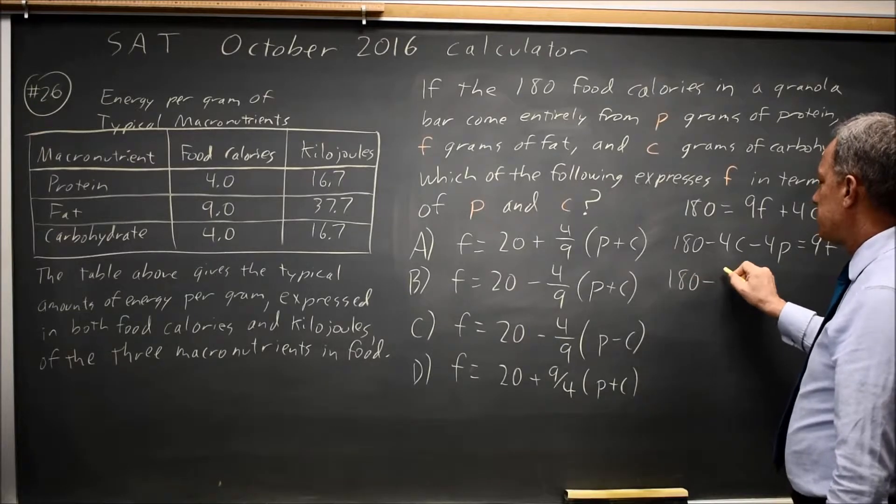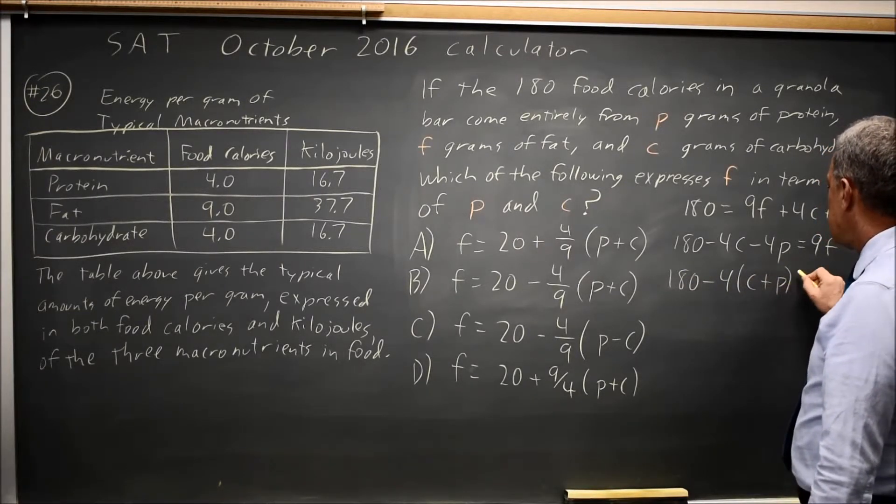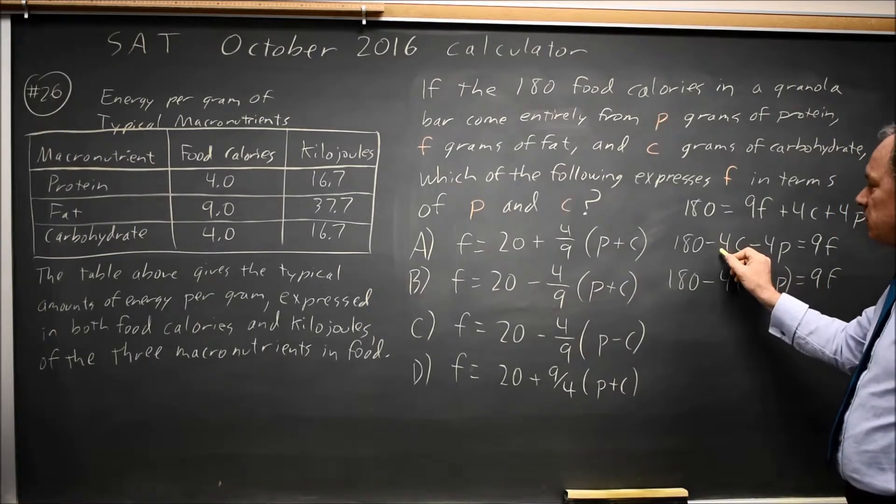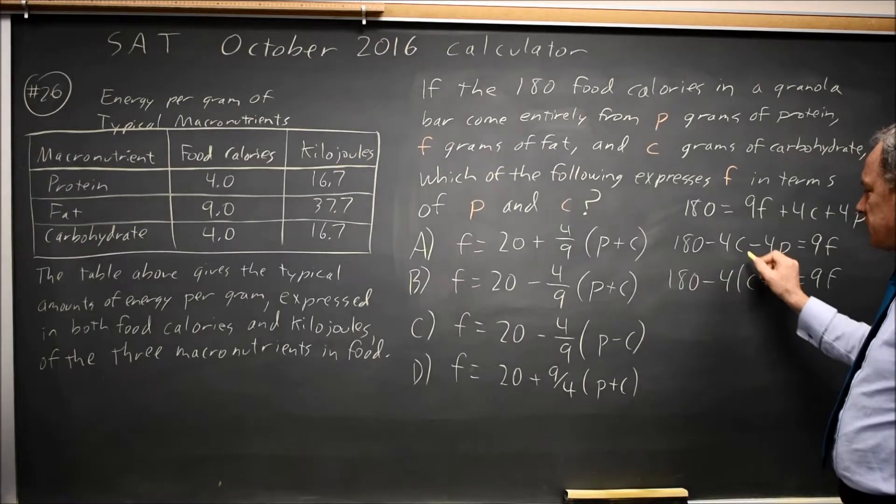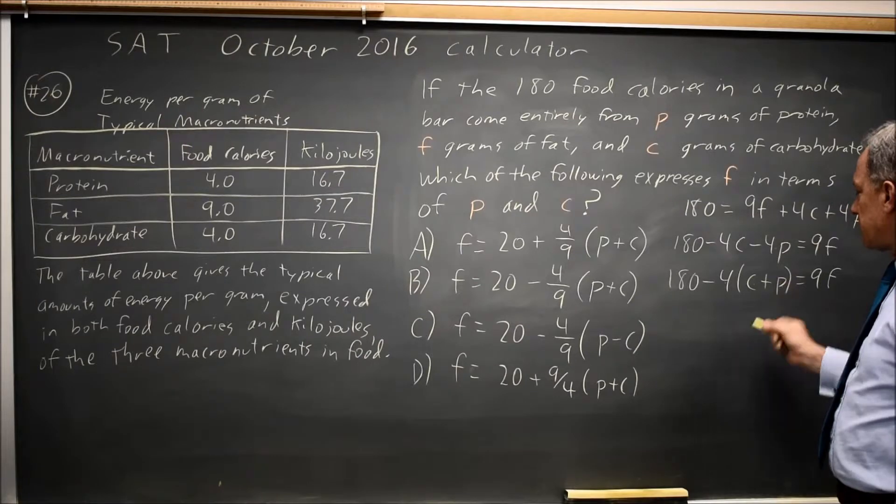So let's write that as 180 minus 4 times the quantity C plus P equals 9F, and this is a plus because when I distribute negative 4 times C, that's negative 4C, negative 4 times P is negative 4P, so it is a plus inside the parentheses.